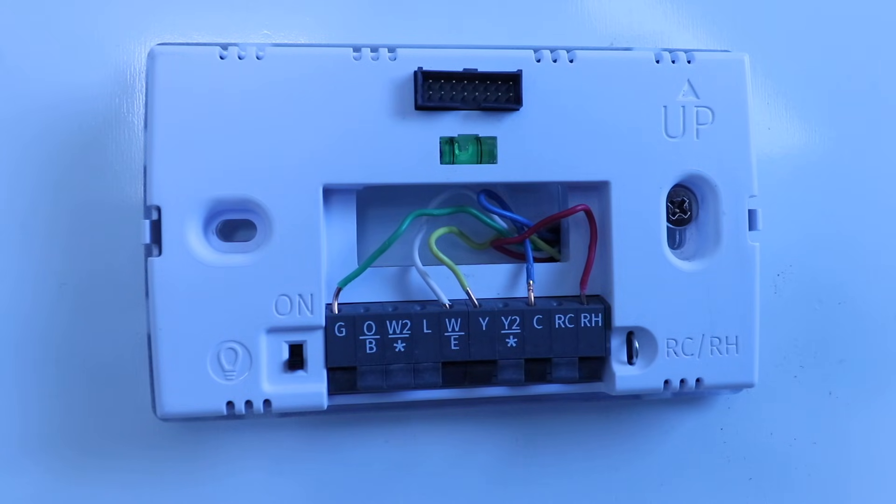How the C wire works for many smart thermostats is it's a return path for current. So it'll allow the smart thermostat to charge even when it's not running, heating, or cooling.